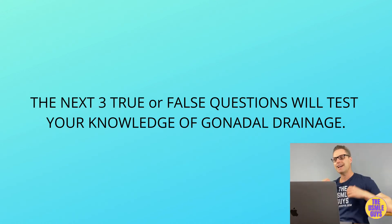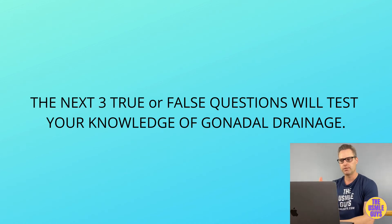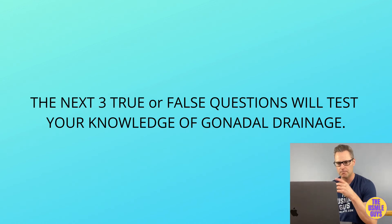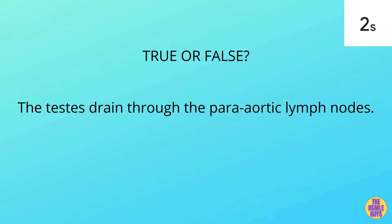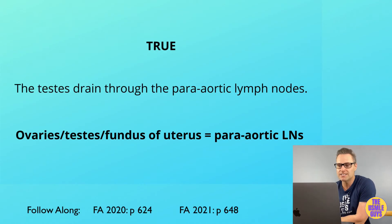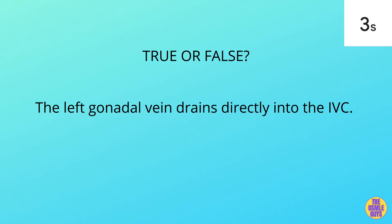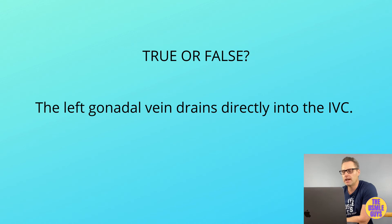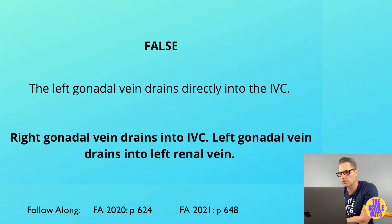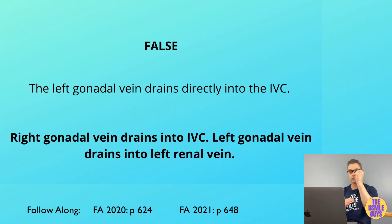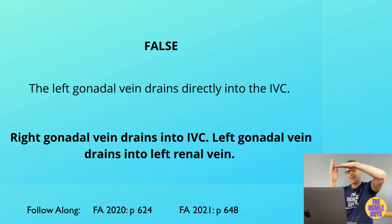Let's do three true or false questions testing our knowledge of gonadal drainage. First question: ovaries, testes, and the fundus of the uterus drain the para-aortic lymph nodes — this is true. Second question about gonadal vein drainage — this is false. Remember, the right gonadal vein drains into the IVC, while the left gonadal vein drains at a 90-degree angle into the left renal vein, which then drains into the IVC. Third question — also false, because the left gonadal (spermatic) vein enters the left renal vein at a 90-degree angle.